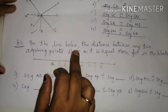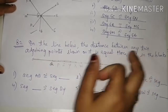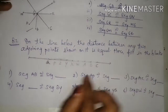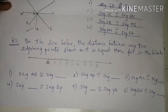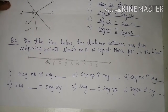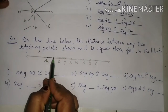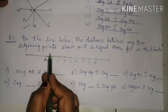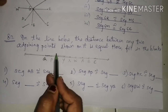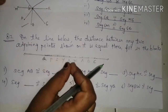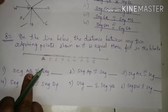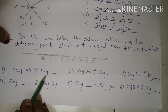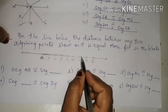Now the next question: on a number line, the distance between any two adjoining points shown on it is equal. We have to fill in the blanks. The distance between two adjoining points — like QP or PZ — is 1 unit. For the first blank: segment AB is congruent to segment blank. Between A and B the distance is 1 unit.